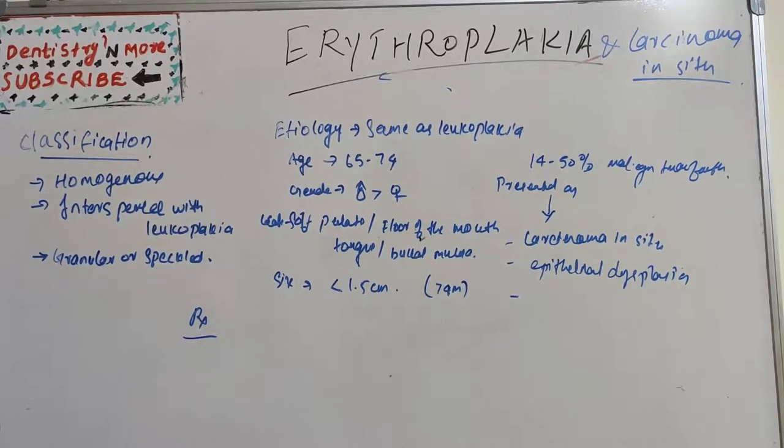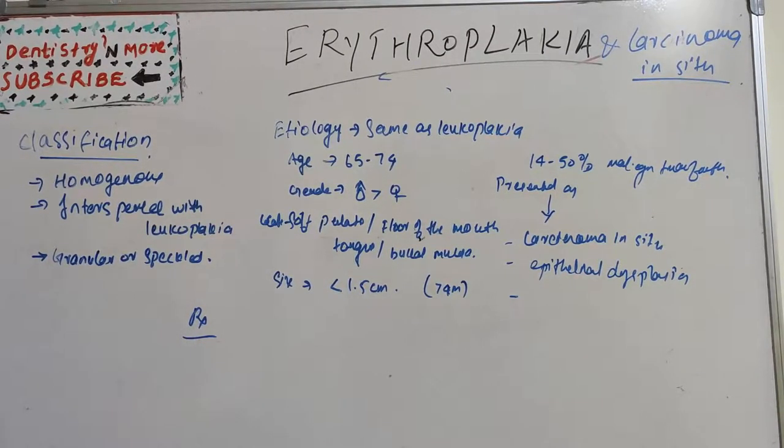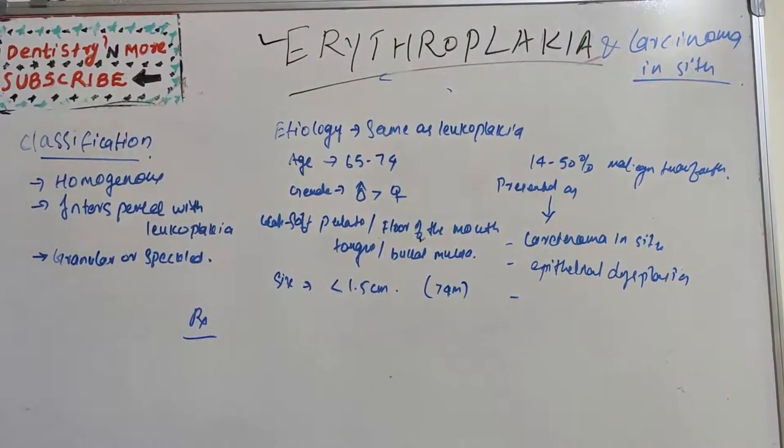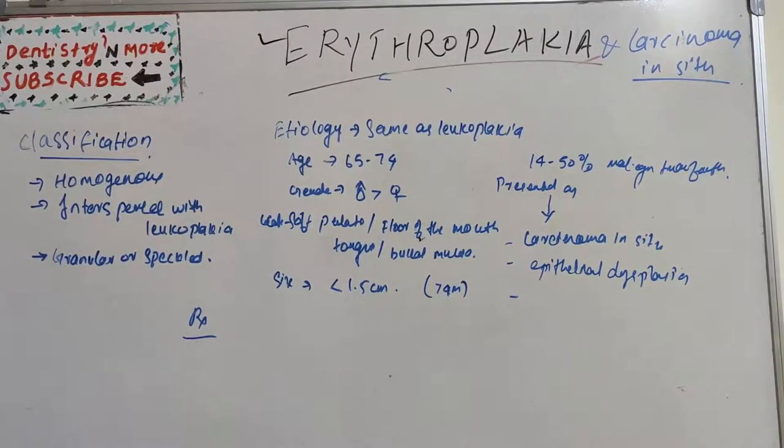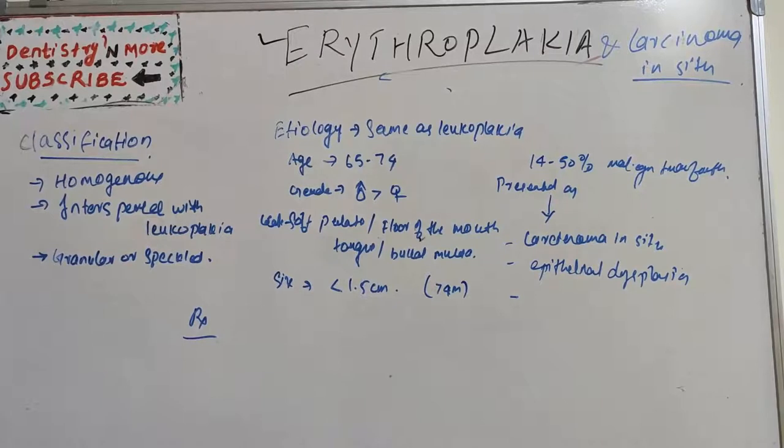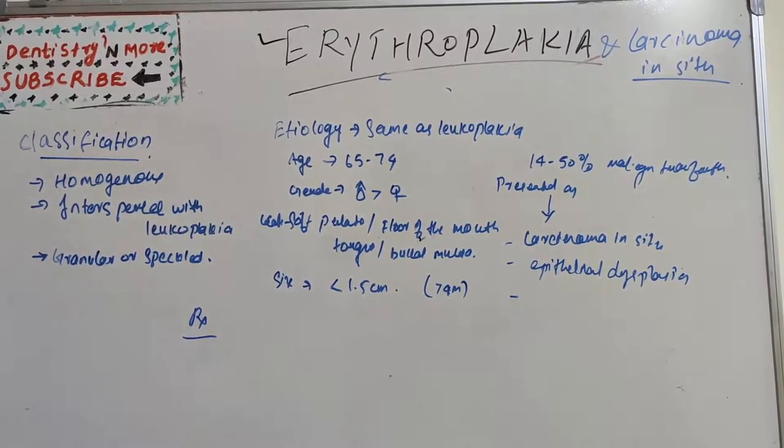So this is about pre-malignant or pre-cancerous lesions: leukoplakia, erythroplakia, and carcinoma in situ. Today's session is about erythroplakia and carcinoma in situ. Leukoplakia we have already covered in this channel, so you can watch the video uploaded previously. Similarly, pre-malignant conditions like oral submucous fibrosis or lichen planus have already been uploaded. Now let's learn about erythroplakia and carcinoma in situ.